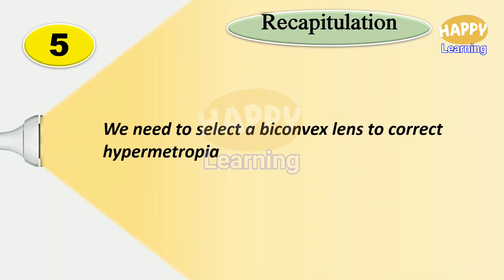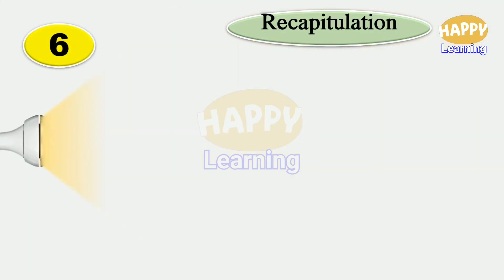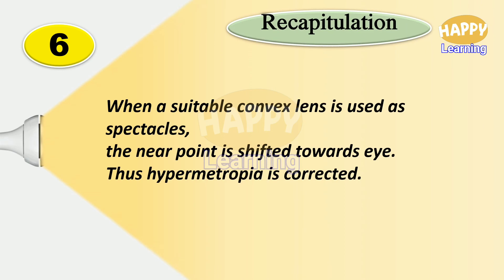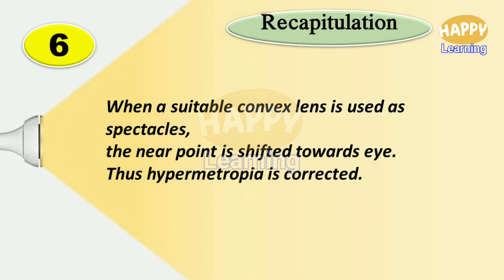Point five: we need to select a biconvex lens to correct hypermetropia. Point six: when a suitable convex lens is used as spectacles, the near point is shifted towards eye, thus hypermetropia is corrected.